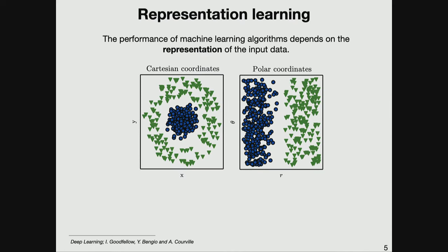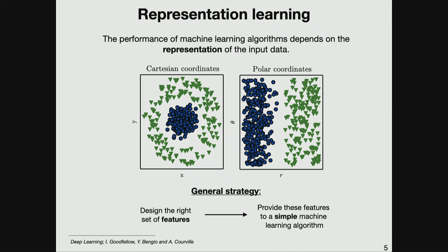To understand what I mean by feature extraction, consider a simple example. Suppose we want to separate blue circles from green triangles with some function. The problem in Cartesian coordinates can be solved, but if we look at the same problem in polar coordinates, it is much easier — we just need a straight line. This approach is quite general: we can solve our problem by first designing the right set of features in which the problem becomes easier, and then using a very simple algorithm not in the original space but in this feature space.